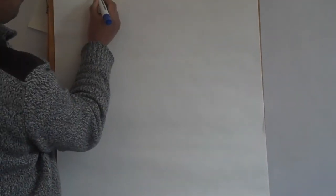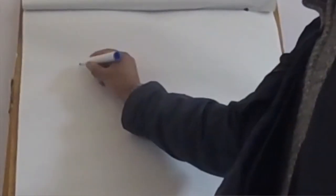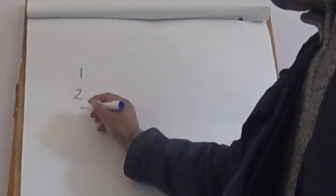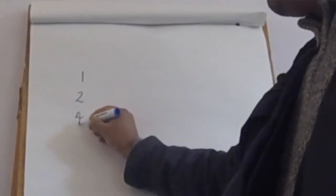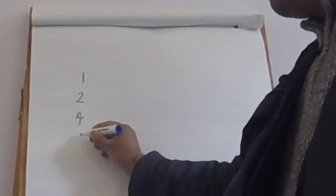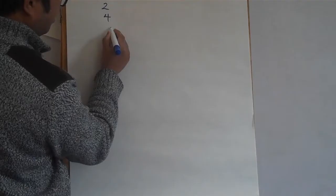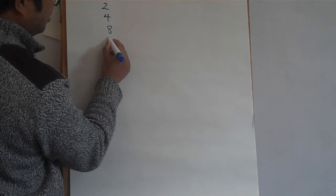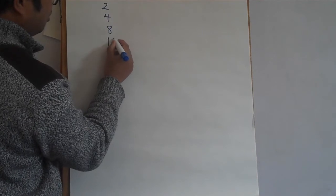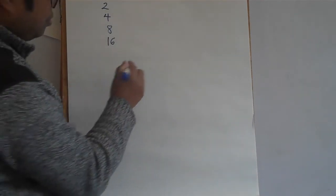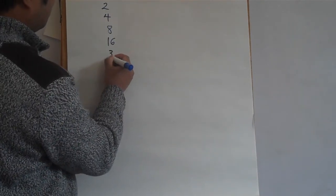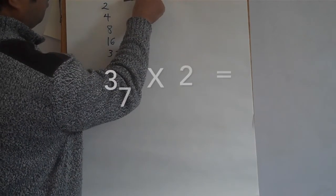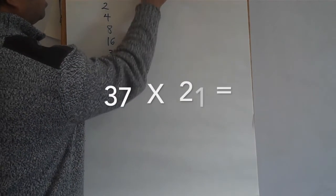What is double one? Two. What is double two? Four. What is double four? Eight. What is double eight? Sixteen. What is double sixteen? Thirty-two. Now in here, we always start with that number on the other side.